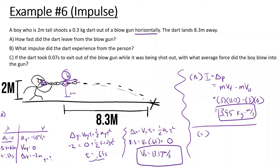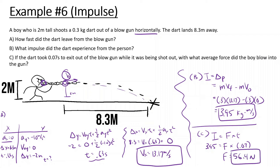Part C: with what average force did the boy blow the dart? Impulse equals force times time. Impulse is 3.95, and the dart took 0.07 seconds to exit the blowgun. Force equals 3.95 divided by 0.07, giving us approximately 56.4 newtons. It's a little complicated because we had to incorporate projectile motion, but hopefully that made sense.